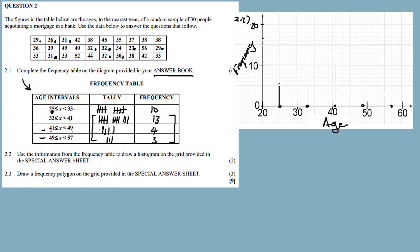Now for the bars: the frequency for the first bar — that is the 25 to 33 group — is 10. For the second bar, the 33 to 41 group, it's 13. So mark up to 13 on the y-axis for that bar.